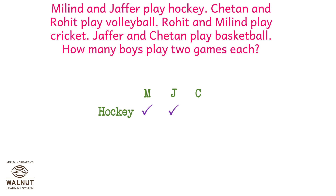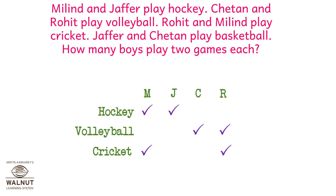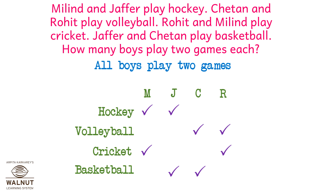Now let's add Chetan and Rohit and write down 'volleyball'. Chetan and Rohit play volleyball, so we put ticks next to them. Then we add 'cricket' and tick Rohit and Milind. Then we add 'basketball' and tick Jafar and Chetan. So all boys play two games, because for every name there are exactly two tick marks.